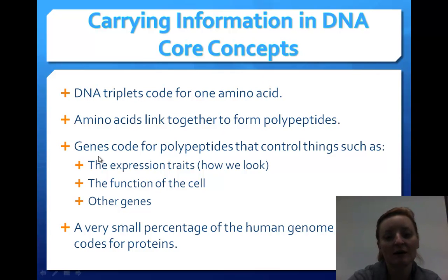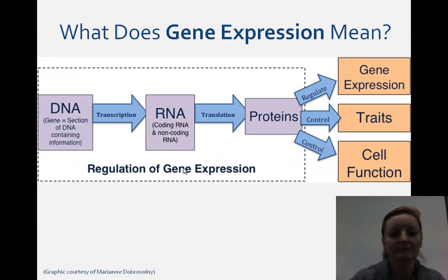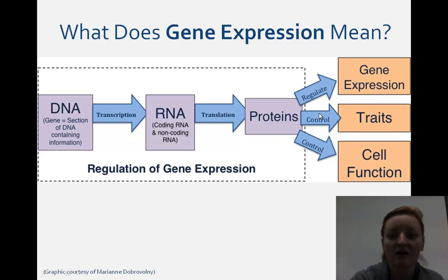Genes code for polypeptides that control things such as your expressions — like how you look — your cell functions, and other genes. Very, very few actually code for proteins, even though proteins do all the work in our body. With the central dogma, we start with DNA that is transcribed into RNA, which is then translated into proteins. Proteins regulate gene expression, control our traits, and control cell function.